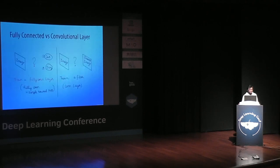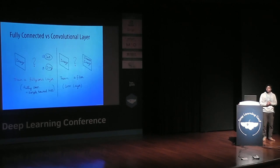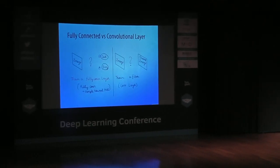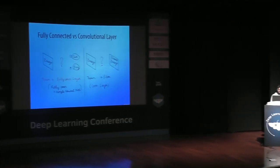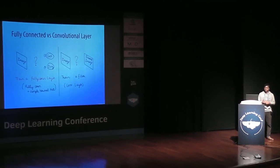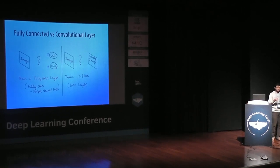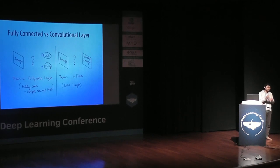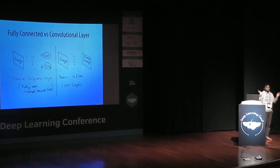If you have a restriction of only one layer and need to decide between a convolutional layer or a fully connected network, think about the problem. For cat vs. dog classification, every pixel should have a connection to the output category — that's a fully connected layer. But if you want to sharpen an image or learn a filter for a specific problem, you'd prefer training a filter rather than an all-to-all connection — that's where CNNs come in.